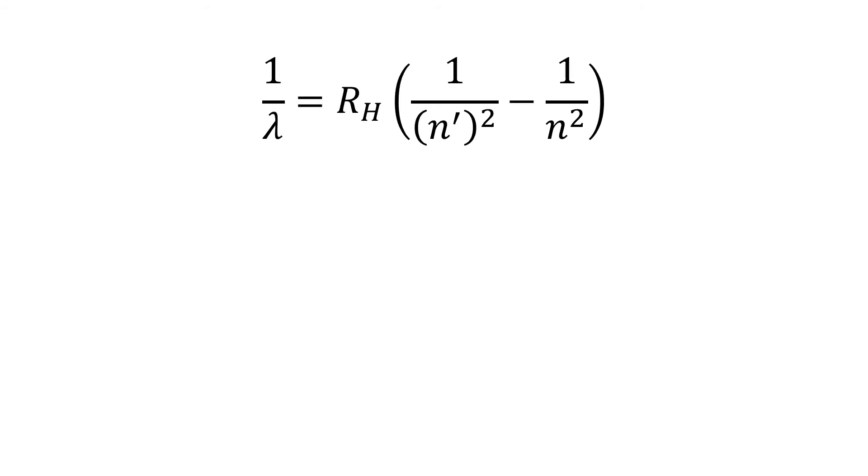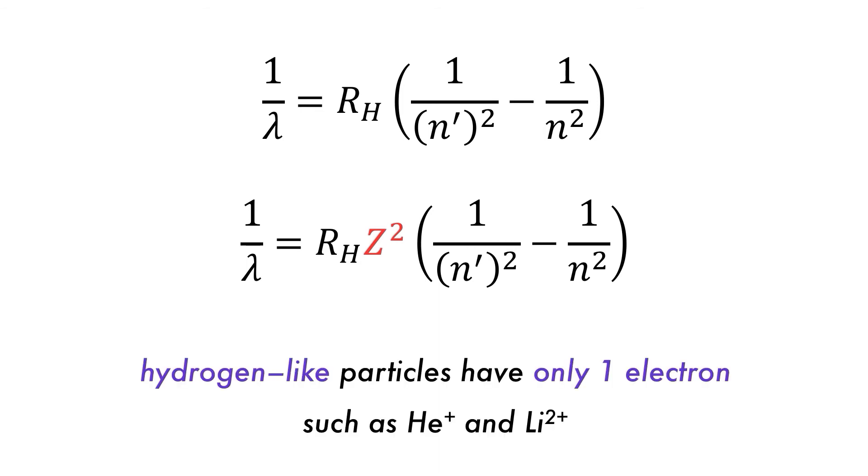The Rydberg equation can also be modified to calculate the spectral lines of any hydrogen-like particle such as helium plus or lithium two plus by including z, the atomic number of the particle.